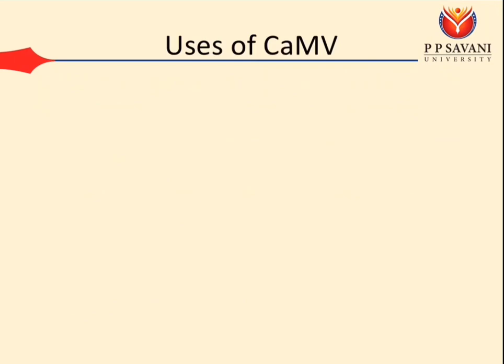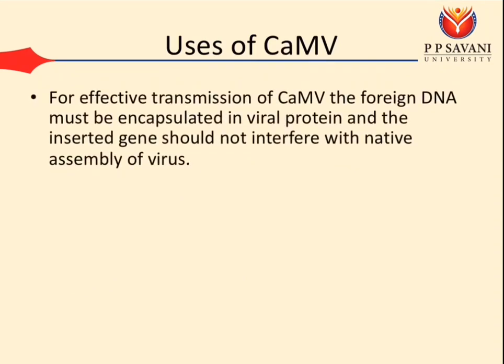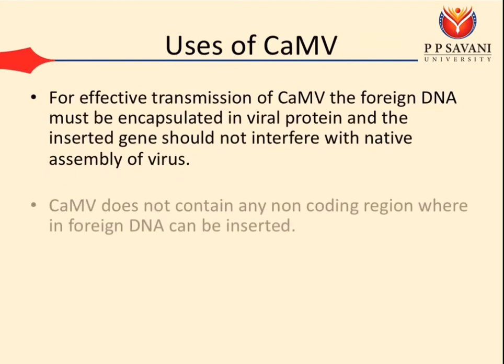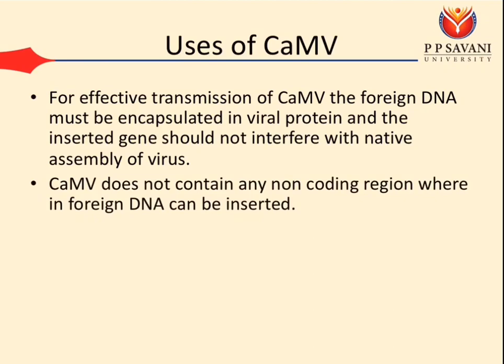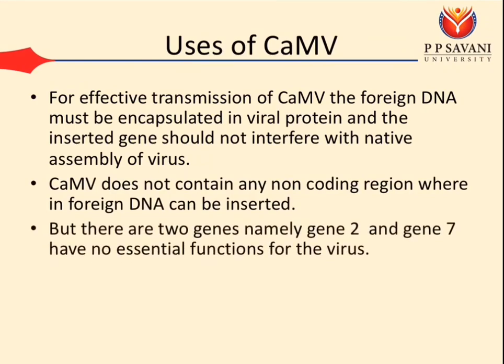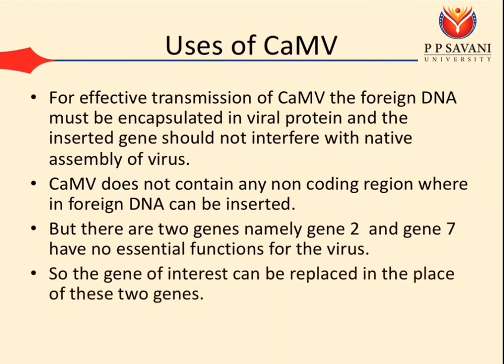Regarding uses of Cauliflower Mosaic Virus as a vector, for effective transmission, foreign DNA must be encapsulated in viral protein and the inserted gene should not interfere with native assembly of the virus. CaMV does not contain any non-coding region where foreign DNA can be inserted, but two genes — gene 2 and gene 7 — have no essential function for the virus, so a gene of interest can be inserted in place of these two genes.